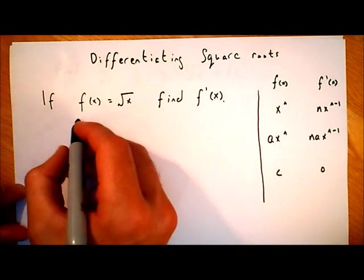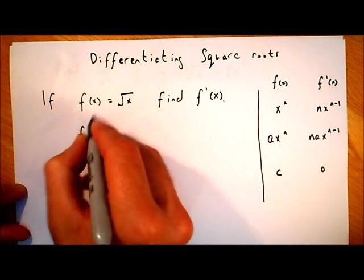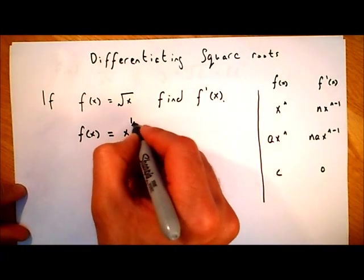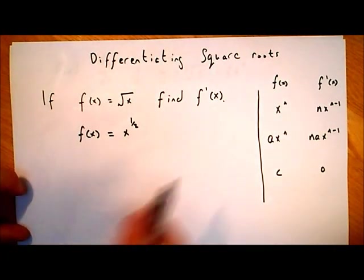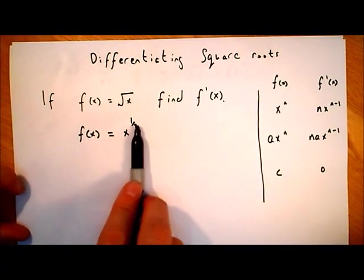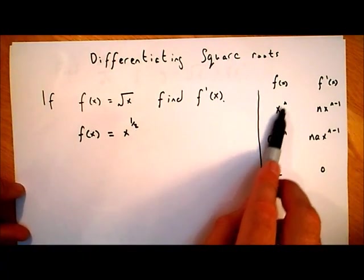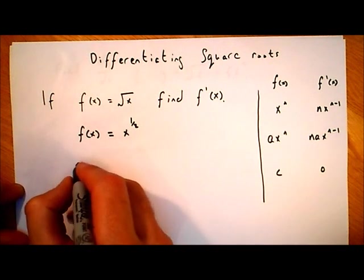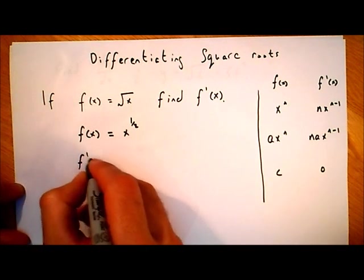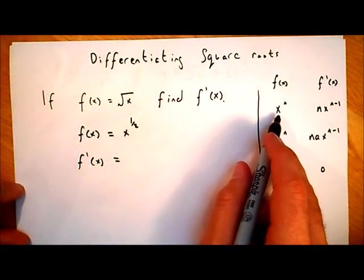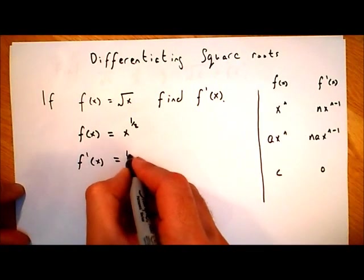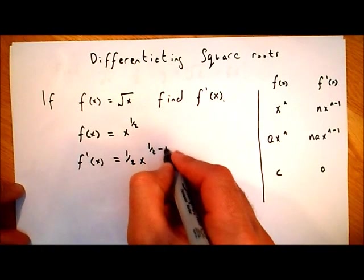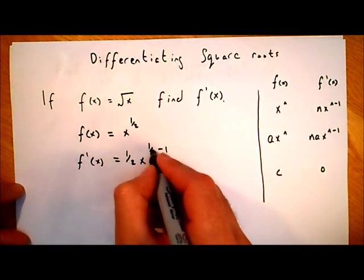But if we remember another way to write the square root of x — instead of writing f of x equals the square root of x, I could rewrite that as f of x equals x to the power of a half. Now I can use the x to the power of n rule, where n is equal to a half. So f dash of x equals a half multiplied by x to the power of a half minus one.